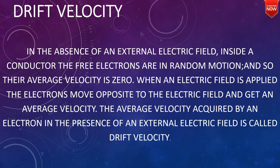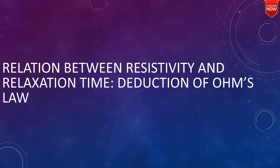When an electric field is applied, the electrons move opposite to the electric field and get an average velocity. The average velocity acquired by an electron in the presence of an external electric field is called drift velocity.